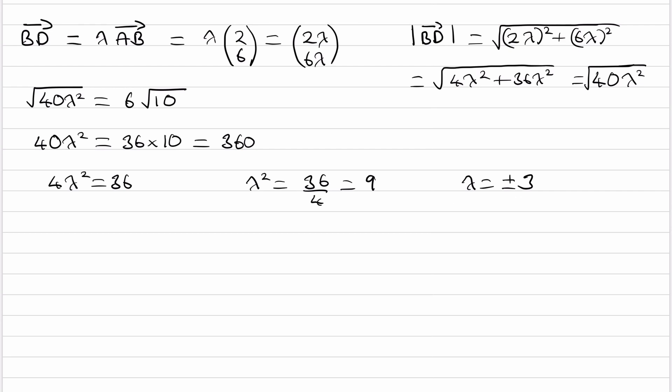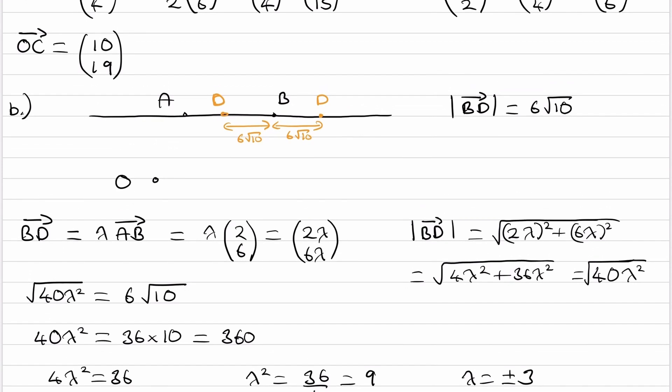And it could be either one, either positive 3 or negative 3. If it were positive 3, it's going in one of these two directions. And if it's negative 3, it's going in the other direction.